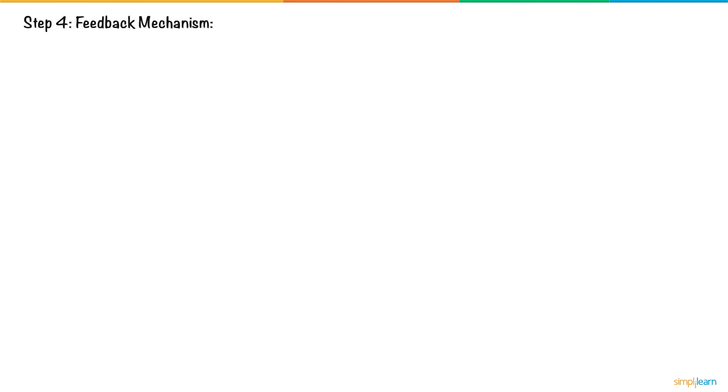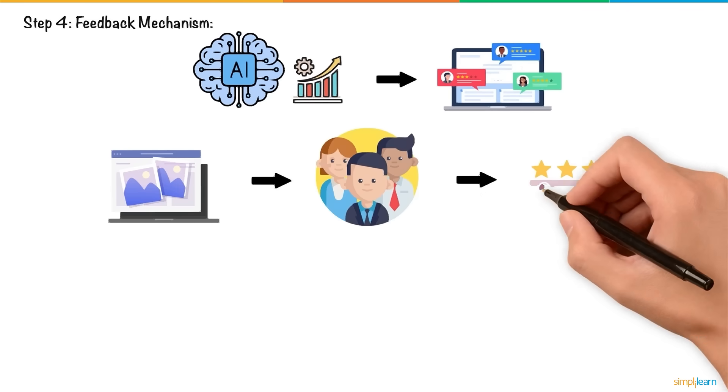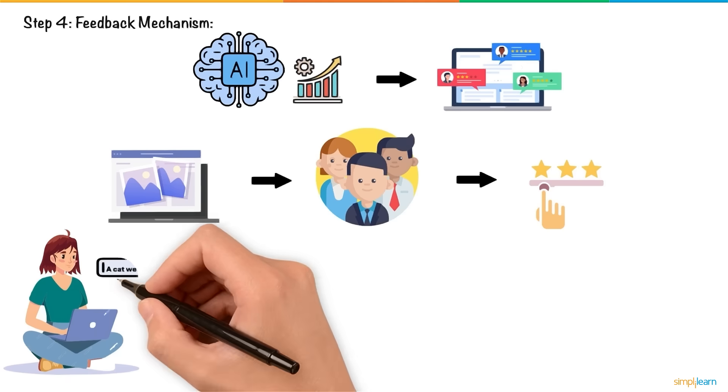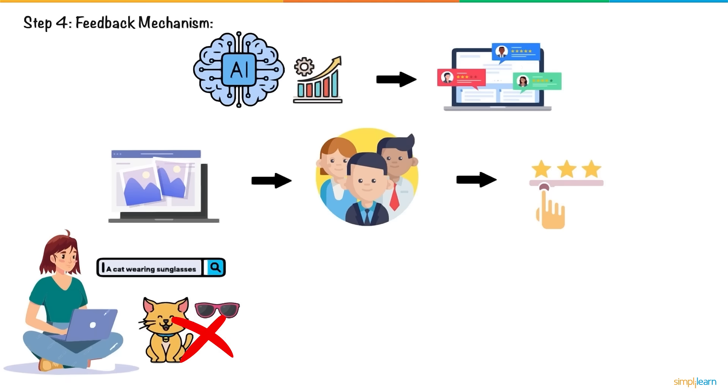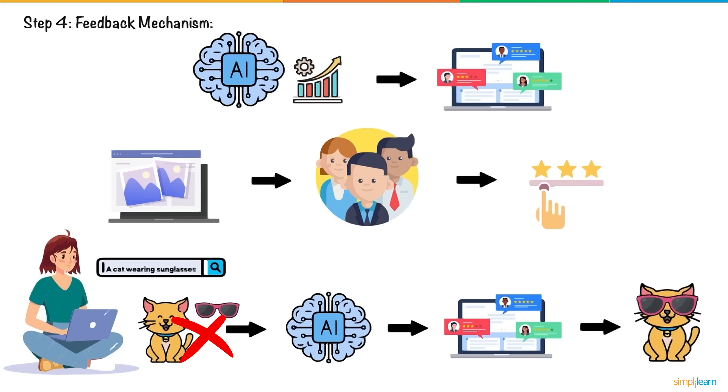Feedback Mechanism: Generative AI models improve through feedback. After generating an image, users provide feedback on the accuracy or quality of the output. If Emma's generated image shows the sunglasses floating beside the cat, she can mark it as incorrect. The model uses this feedback to improve future image generations.